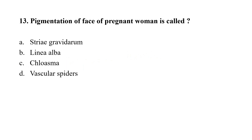Question number 13: Pigmentation of the face of a pregnant woman is called — option A: stria gravidarum; option B: linea alba; option C: chloasma; option D: vascular spiders. The correct option is C, that is chloasma.